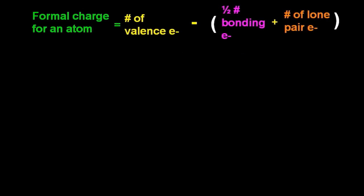The formal charge for an atom is the number of valence electrons minus half of the bonding electrons plus the number of lone pair electrons. There are different versions of this equation, but I like this one. They all give the same final number for formal charge.